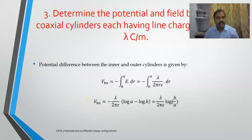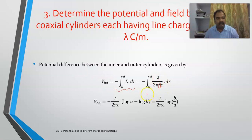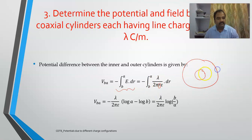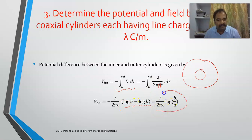Using Gauss's law: the charge enclosed is lambda times h, and E dot ds equals E times 2πrh. Setting this equal to lambda h over epsilon, we get E equals lambda over 2π r epsilon. To determine the potential difference between the cylinders, we integrate from a to b, obtaining V equals lambda over 2π epsilon times (log a minus log b), which gives the expression for voltage between the two coaxial cylinders.